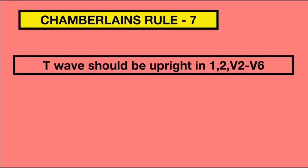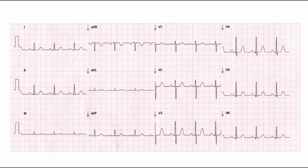Rule 7 states that T waves should be upright in leads 1, 2, and V2 to V6. We can see that in lead 1, lead 2, and leads V2 to V6, T waves are upright.